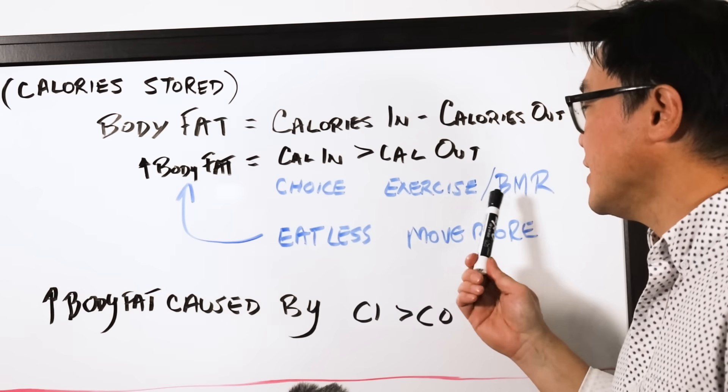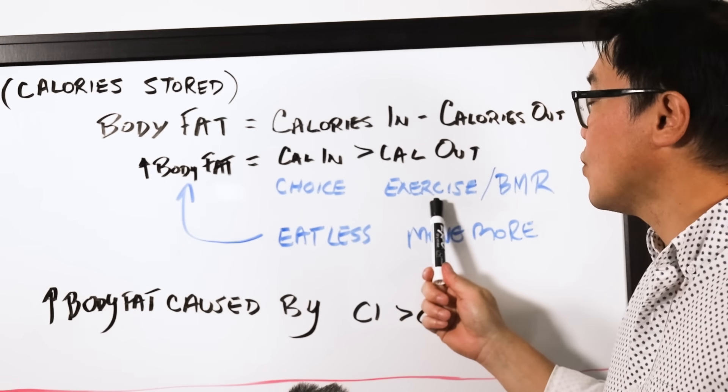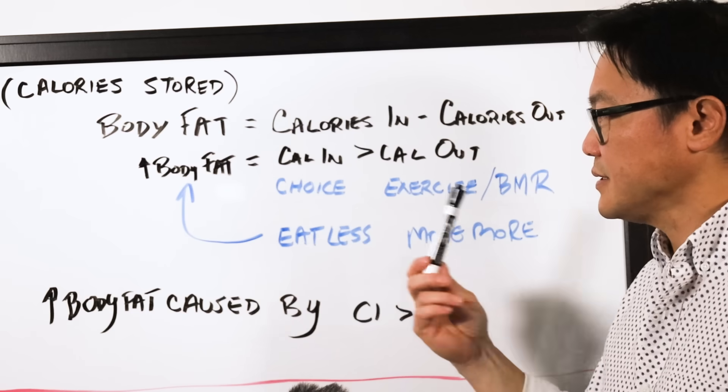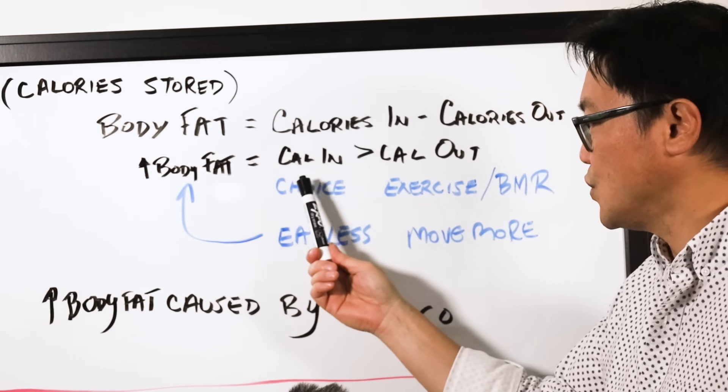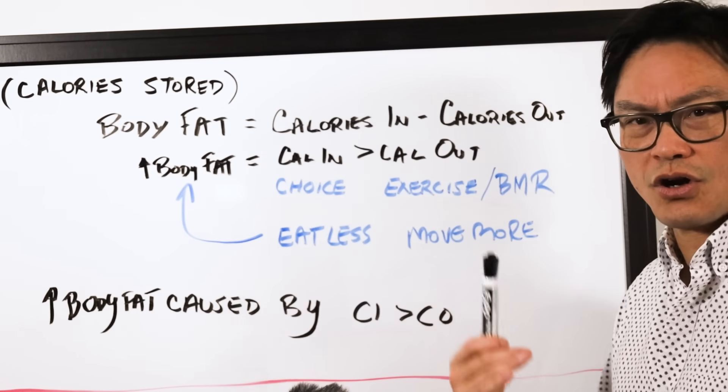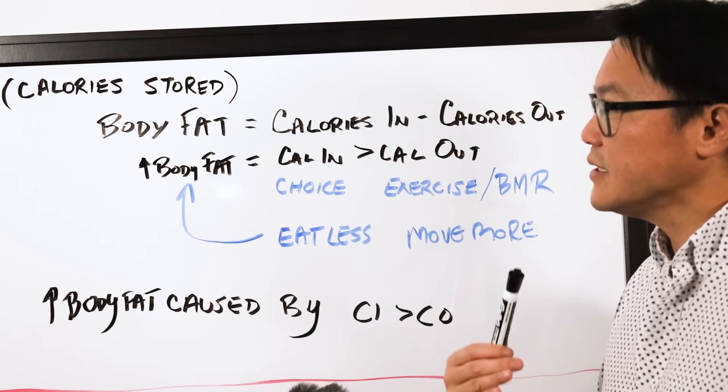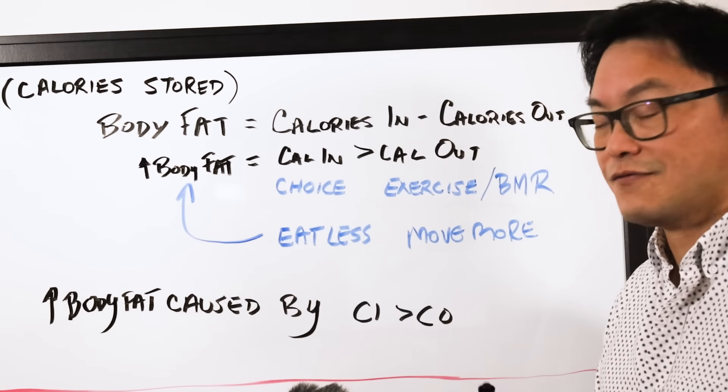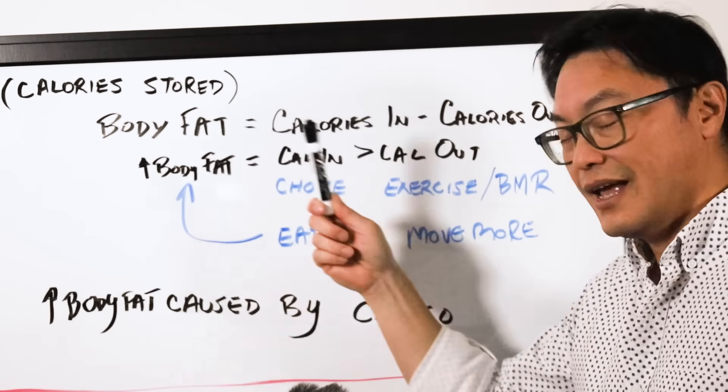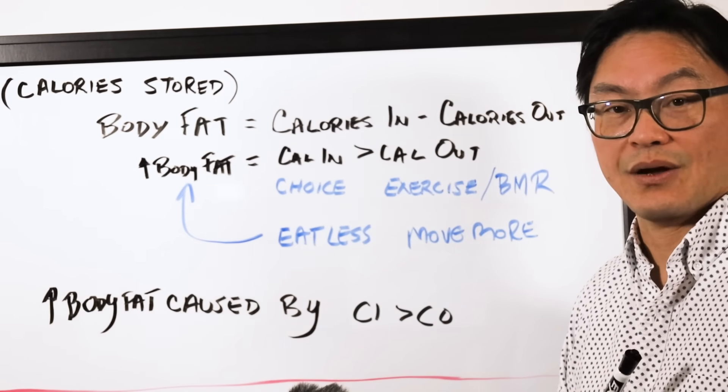And this is considered largely fixed, so therefore it's all about exercise. Since choice of foods and exercise are under conscious control, we can simply lose body fat by eating less, moving more, and therefore we will lose that weight.